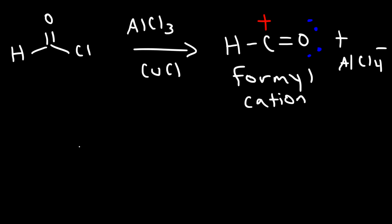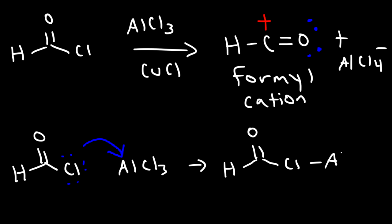But let's talk about the mechanism for that step. And so this acid chloride reacts with aluminum chloride, giving us this product. So at this point, aluminum has a negative formal charge, and chlorine has a positive formal charge with two lone pairs. And then in the next step, the chlorine atom leaves. And so that gives us this formyl cation.